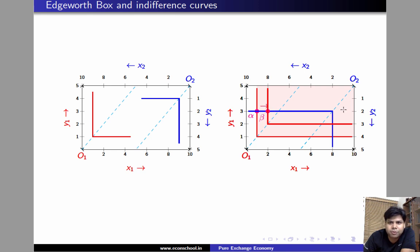A similar reasoning can help us rule out any point below the 45-degree line through the origin of individual 2. I leave that as an exercise — try and check that a point like this cannot be efficient.